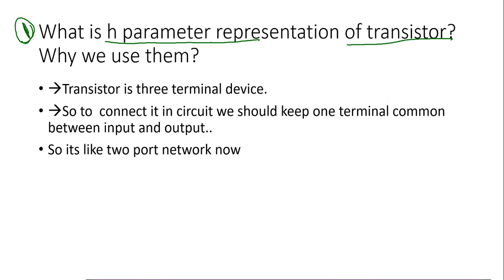We know what a transistor is, and we are representing it in terms of H parameters. So what is that? The second question is: why are we using them? What is the need for using the H parameter representations?